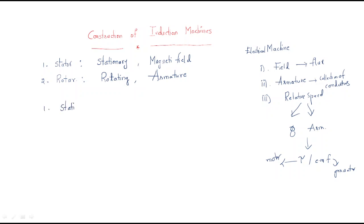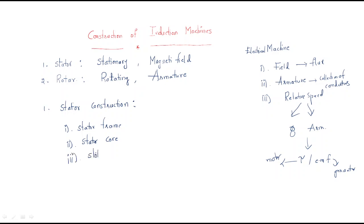To understand the construction of the induction machine, we need to understand the stator, which is used for the magnetic field, and the rotor, which is used as the armature. For the stator construction, the main parts are: the stator frame, the stator core, the slots, and the windings. These are the main important parts used to construct the stator of the induction motor.